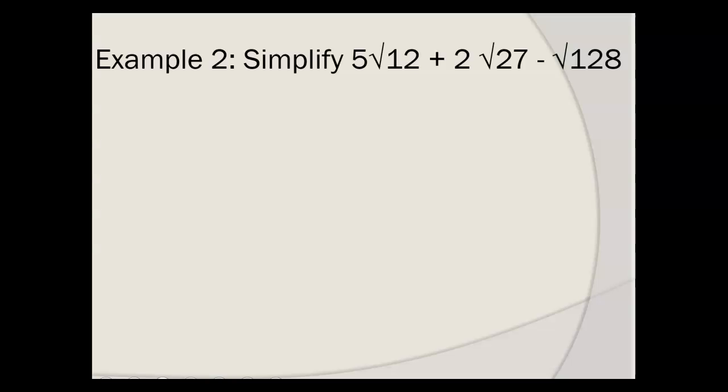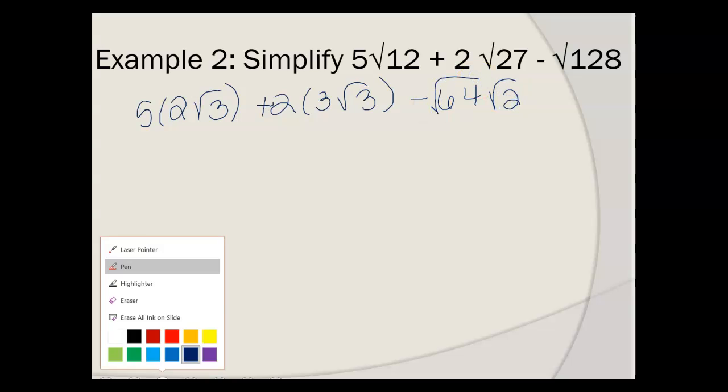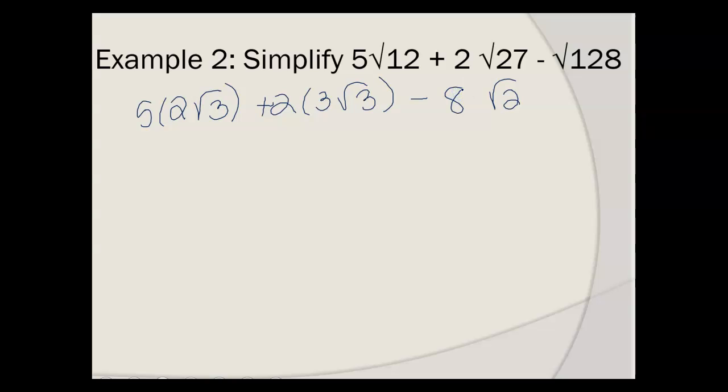5 square roots of 2 plus 2 square roots of 27 plus the square root of 128. So, 27 becomes 3 square root of 3. 128 is 8 square roots of 2 because it's 64 and 2. Square root of 64 and square root of 2, which becomes 8 square roots of 2. So even though you say it doesn't work, it's not a like term to the other ones, but you still need to simplify it. So 5 times 2 is 10, 2 times 3 is 6. So you have 16 square roots of 3 minus 8 square roots of 2.